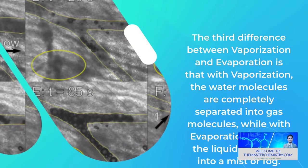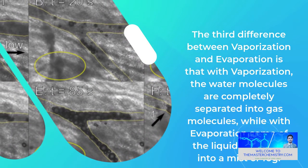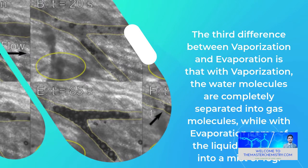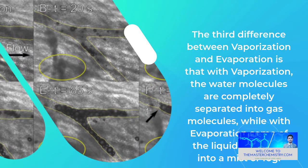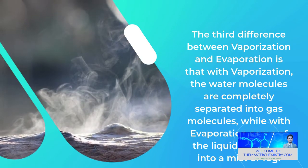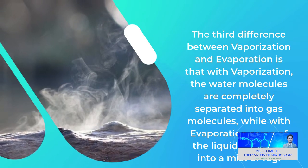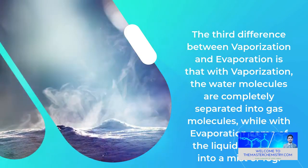The third difference between vaporization and evaporation is that with vaporization the water molecules are completely separated into gas molecules, while with evaporation some of the liquid vaporizes into a mist or fog.